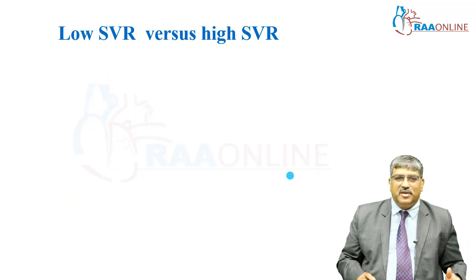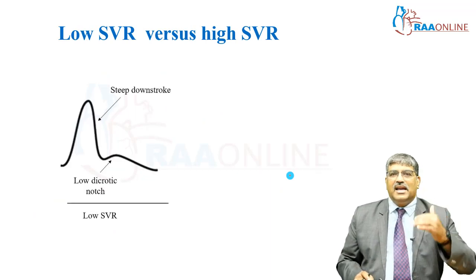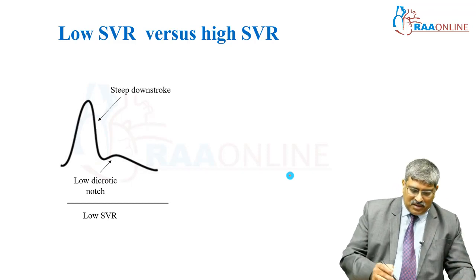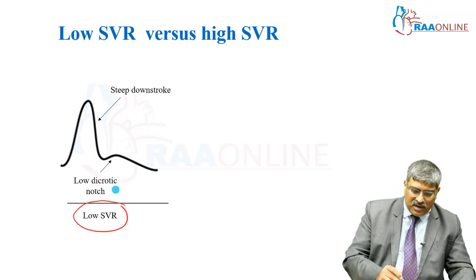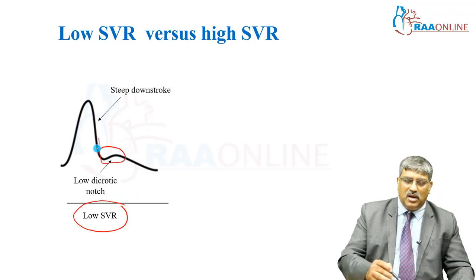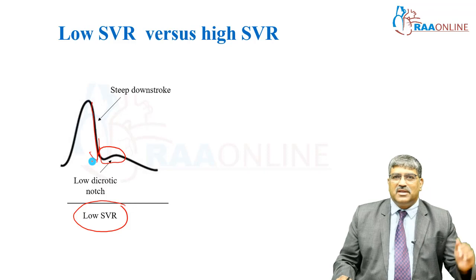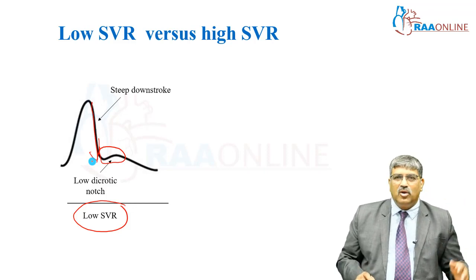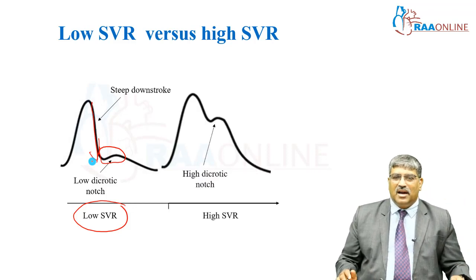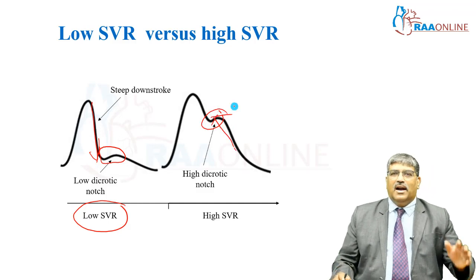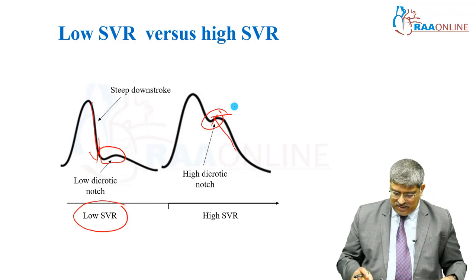Another way to put it: low SVR is vasodilated and high SVR is vasoconstricted. With low SVR, the dicrotic notch is pushed down and there is a steep downstroke, which represents vasodilation. In the case of high SVR, the dicrotic notch is pushed up, representing a vasoconstricted state.